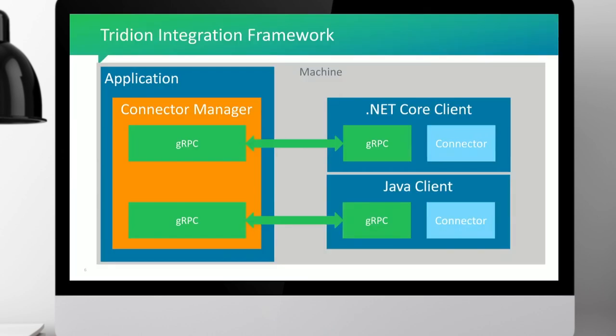The integration framework is a framework you can consume in multiple places in the products. The framework itself consists mainly of a Connector Manager, which is more like a library that is hosted in an application running on a machine. With the Connector Manager, we can create a gRPC channel to another process. gRPC stands for Google Remote Procedure Calls — it's a third-party product we're using.